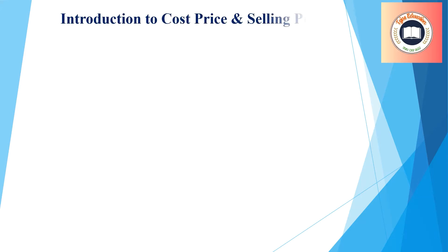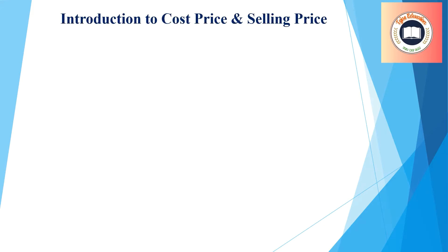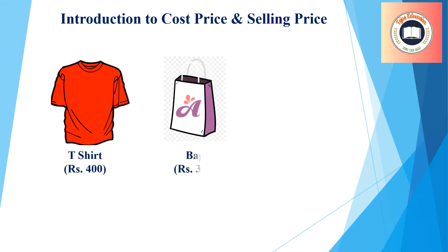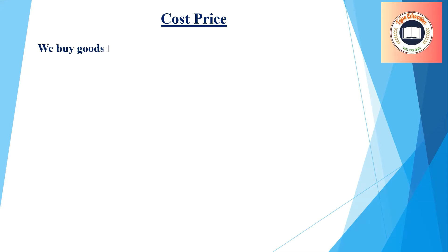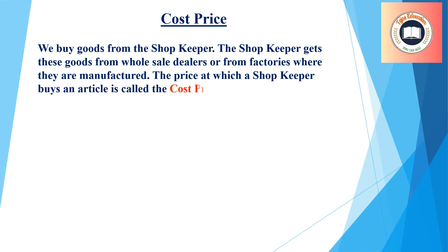Introduction to cost price and selling price. Towards Rishi's query, let us assume a situation where a shopkeeper is about to arrange his shop before the customers arrive. The shopkeeper has bought t-shirts for Rs. 400 each, bags for Rs. 300 each, and goggles for Rs. 600 each. Cost price: The price at which a shopkeeper buys an article is called the cost price. It is abbreviated as CP.